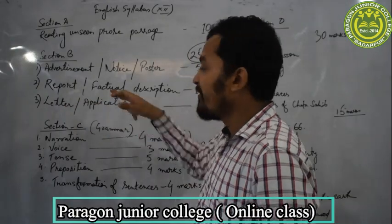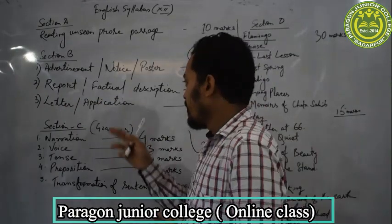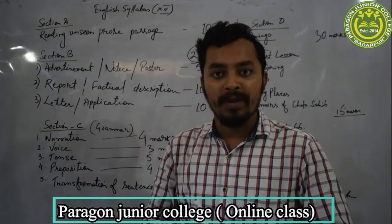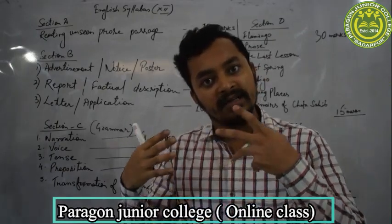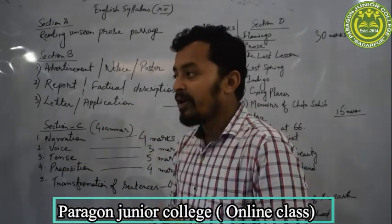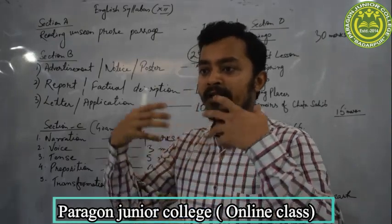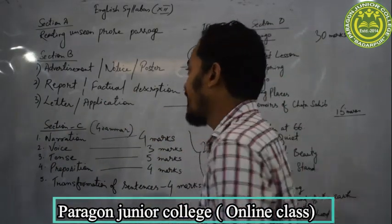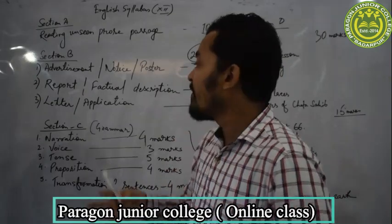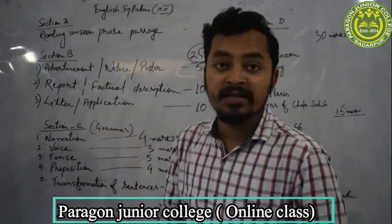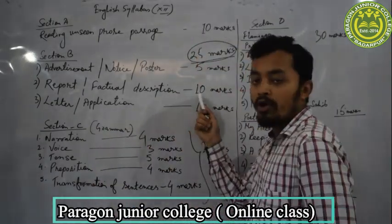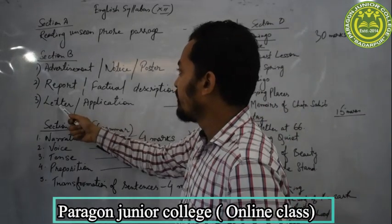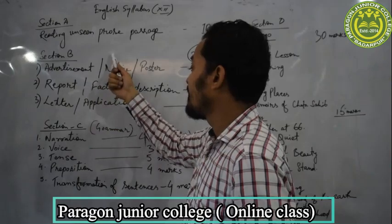Next is Factual Description. Factual description is also not a very tough topic — I can say it is an easy topic. Factual description is a description of your experience based on fact. Some fact should be given and you have to narrate your experience. That is what is called factual description, which also consists of 10 marks.